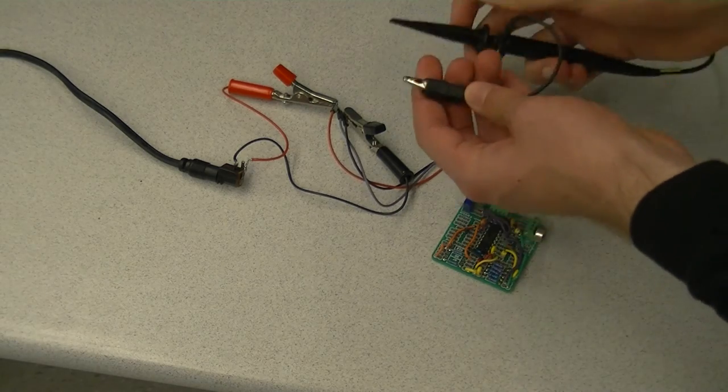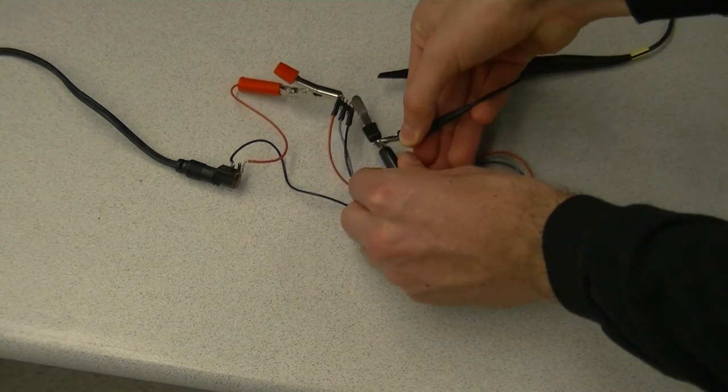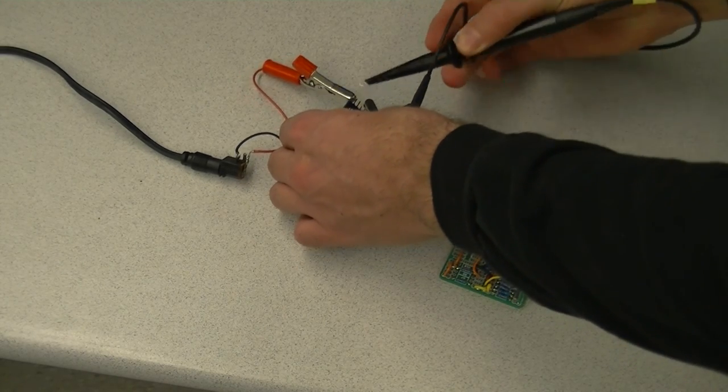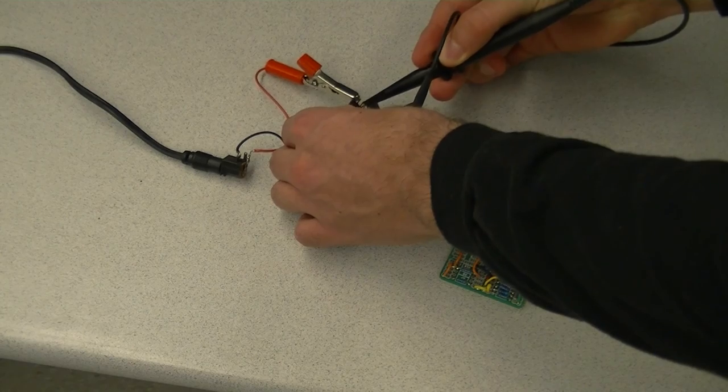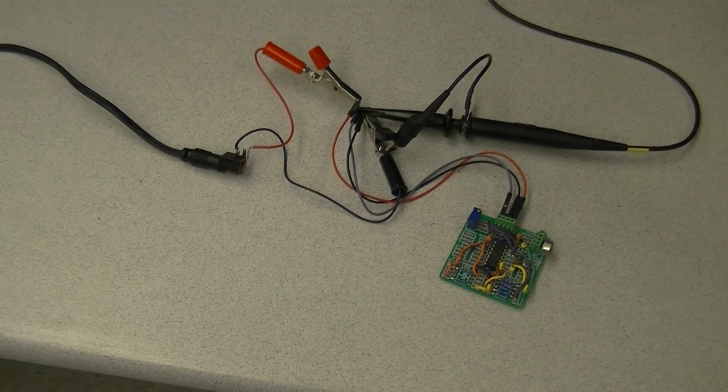We're now going to connect our probe. We connect the ground lead to the ground, and the probe lead here to the center pin, which is the signal. This is a kind of difficult connection to make. Now it's connected, and we can see on the screen the output of the microphone.